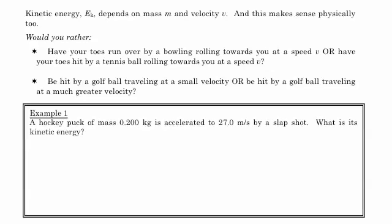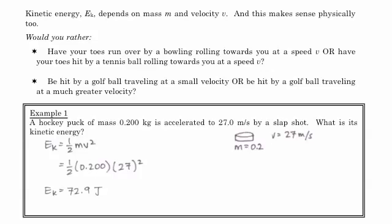So here's example one. A hockey puck has a mass of 0.2 kilograms, and it's accelerated to a speed of 27 meters per second by a slap shot. What kinetic energy does it have when it's at 27 meters per second? And so here's the mass, here's the velocity. And so we've got Ek is equal to 1/2 mv squared. And we sub the numbers in, and we get 72.9 joules. So that's actually not that much energy. But it's because hockey pucks are pretty light. They can still do damage, but they're pretty light.